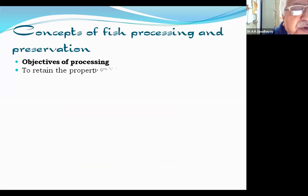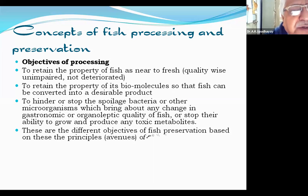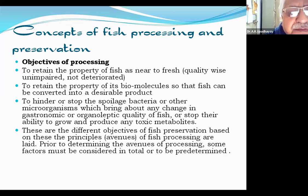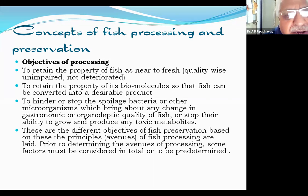What concepts do we derive from fish processing? One of the main objectives is to retain the properties of fish as near to fresh as possible. Fresh is always a misleading term — what looks fresh is not necessarily fresh inside. Fresh means quality-wise unimpaired, not deteriorated. To retain the properties of its biomolecules so that it can be converted into desirable products. We also aim to hinder or stop spoilage bacteria or other microorganisms which bring about any change in the organoleptic quality of fish, or stop their ability to grow and produce toxic metabolites.